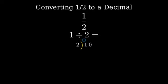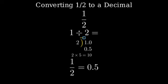Now let's perform the division. Two goes into one zero times, so we bring down the zero. Two goes into ten five times. Therefore, one half as a decimal is zero point five.